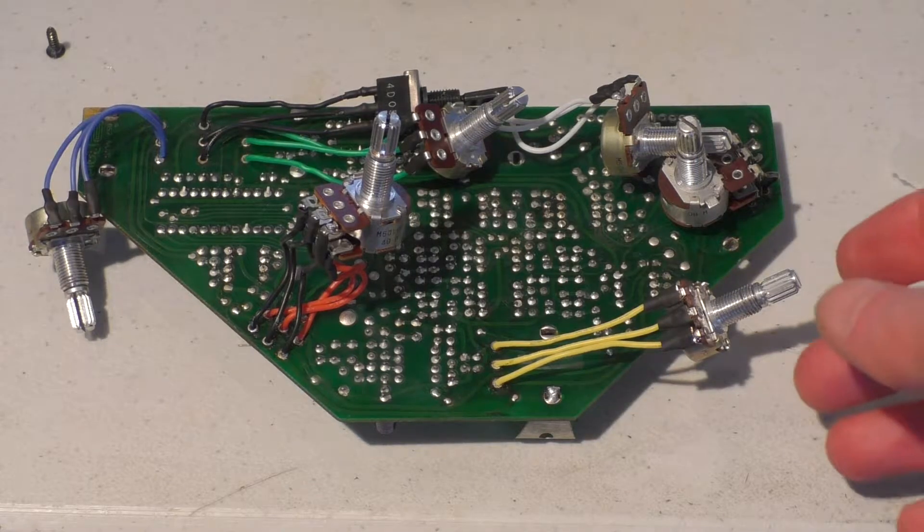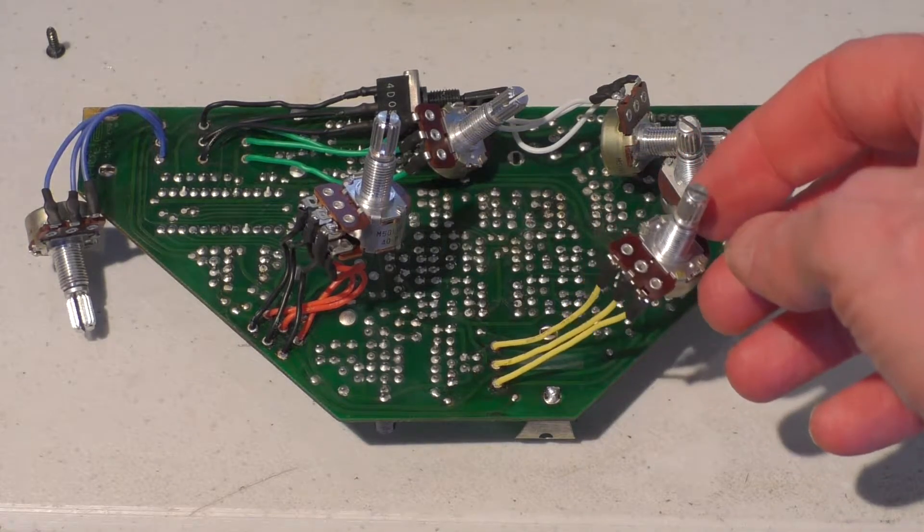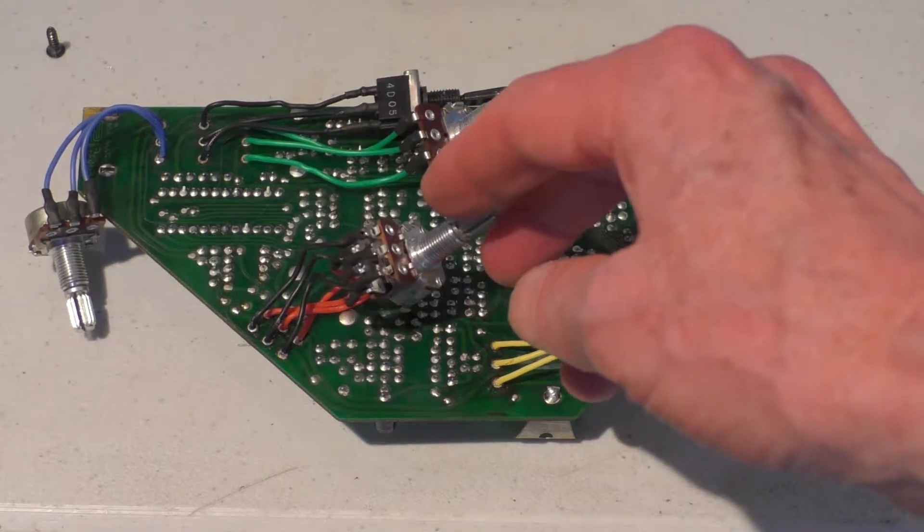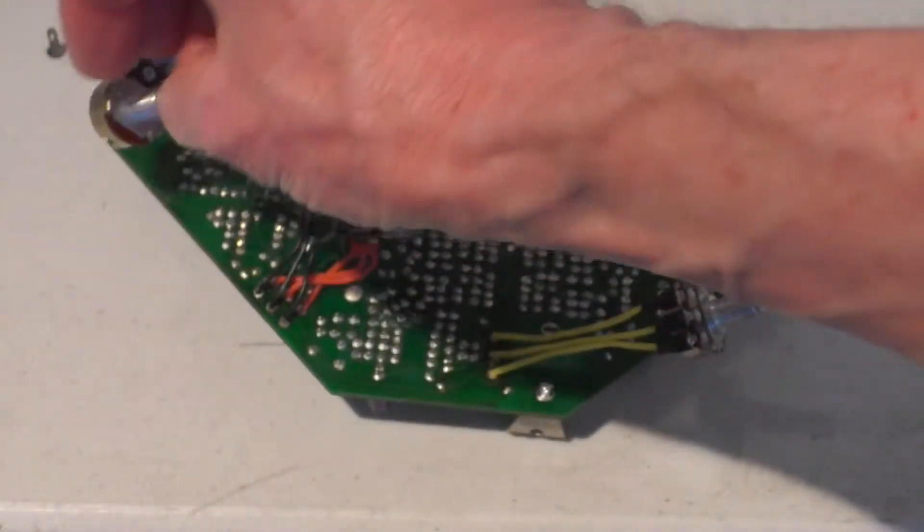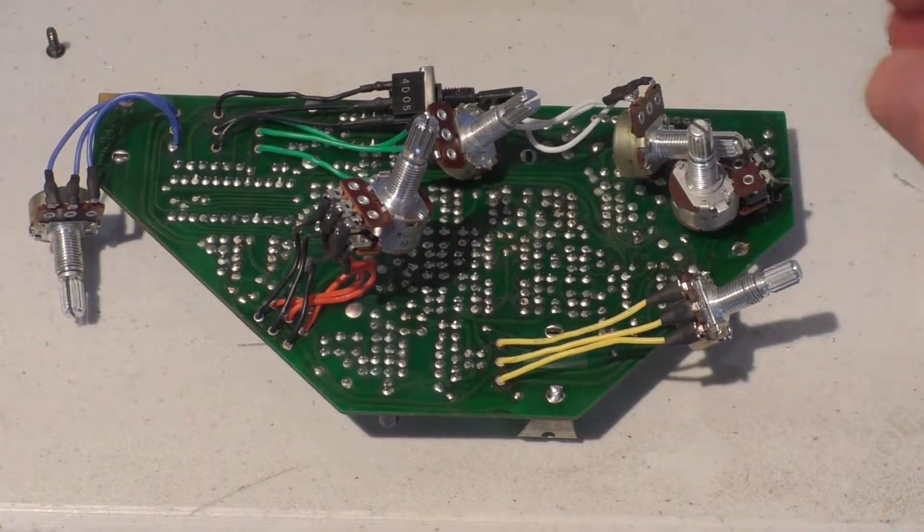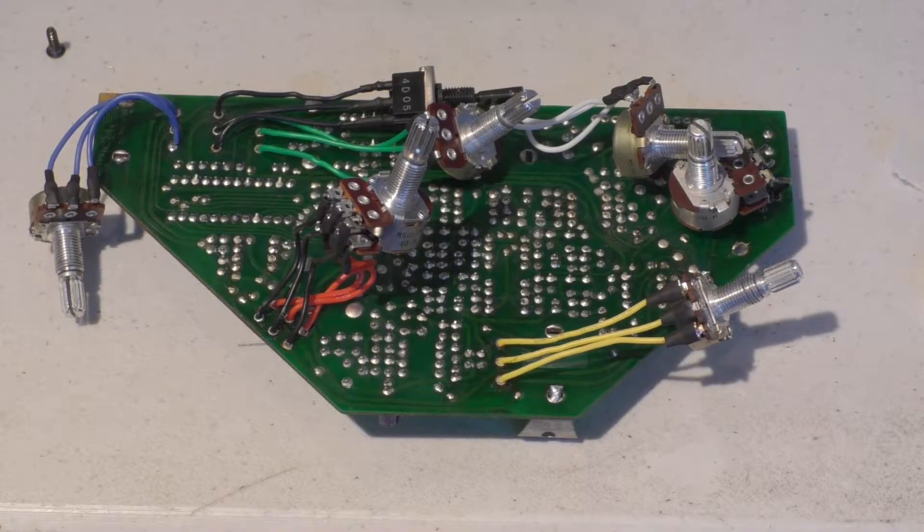I've reattached all the pots and the switch to the original control board, and since I had some different colored hookup wire, I thought maybe I'll do everything in a color-coded fashion rather than just using the white hookup wire.